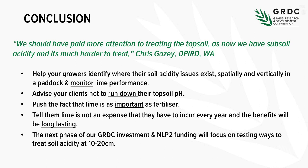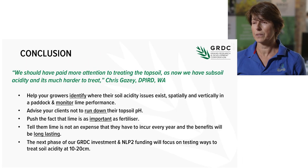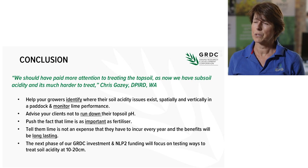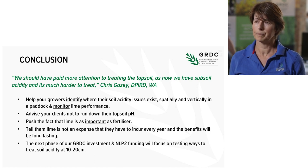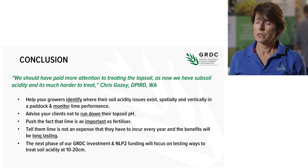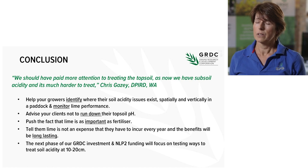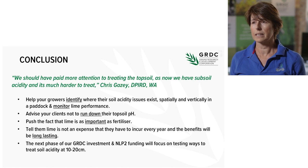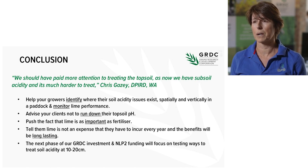The things that we want farmers to do is to see if they've got this issue, which they most likely have if they've let their soil pH drop in their topsoil. We also want them to think about trying to start calculating lime rates not based just on the 0 to 10 centimetres, but ameliorating that acidity at 10 to 20 centimetres and 20 to 30 as well.